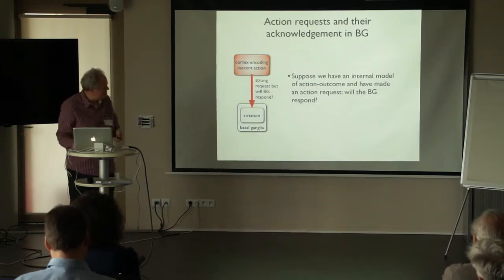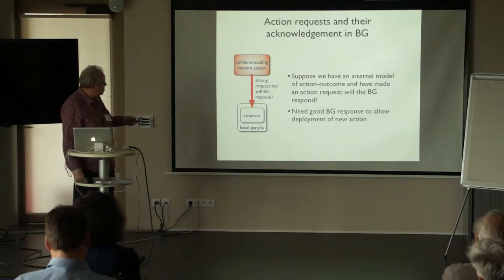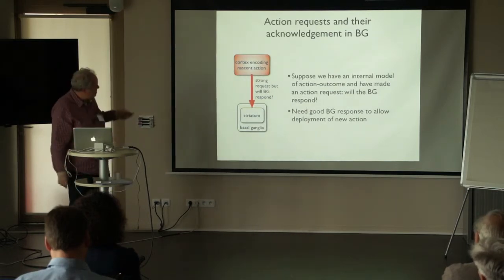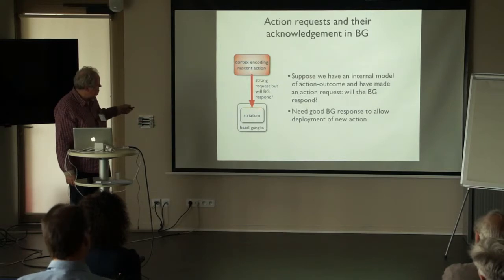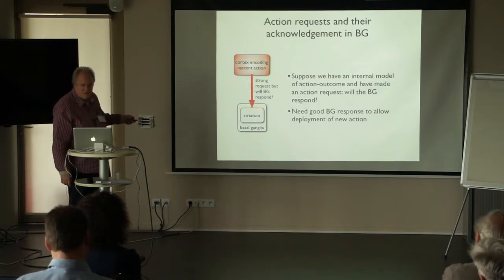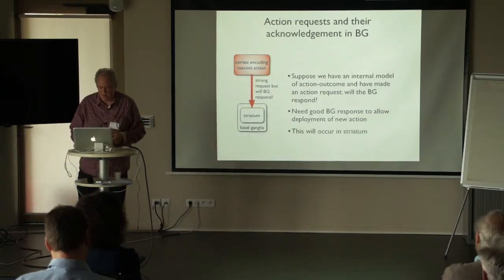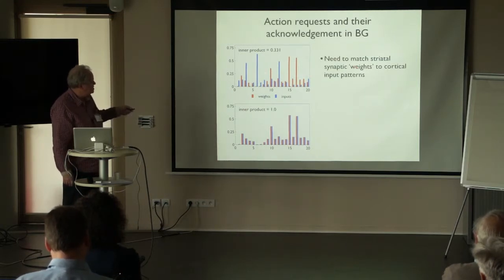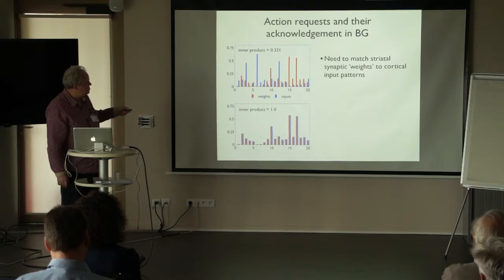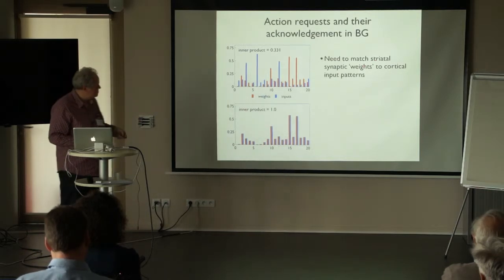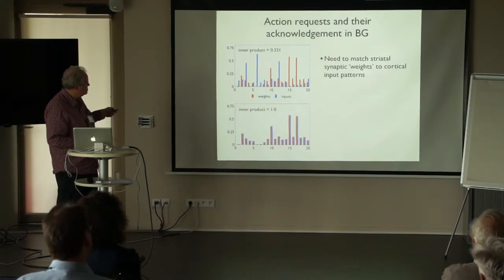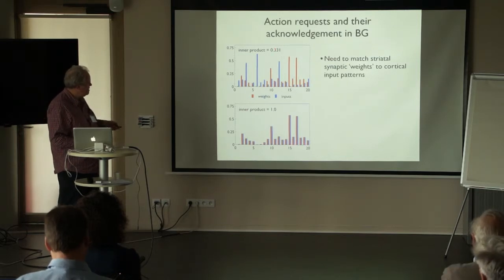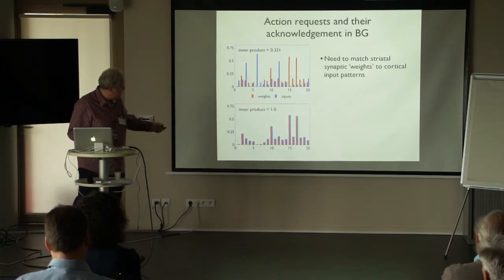But how will the basal ganglia respond? It needs to respond properly to this action request if this action is to be deployed. We use the metaphor of shouters and listeners: he can be shouting very loudly 'I want to do this action now,' but if no one is listening, nothing's going to happen. More formally, it comes down to matching synaptic weights from cortex to the striatum. Here I've got a random agglomeration of weights and inputs forming a neural activation of about a third, whereas when they're nicely matched, I get a strong response.